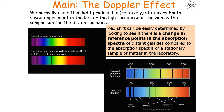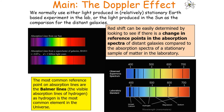Redshift can be easily determined by looking for a change in reference points in the absorption spectra of distant galaxies compared to the absorption spectra of a stationary sample of matter in the lab. The most common reference line is the Balmer lines — the visible absorption lines of hydrogen — as hydrogen is the most common element in the universe. You can compare the Balmer lines of a lab hydrogen sample to those observed in a supernova spectrum.